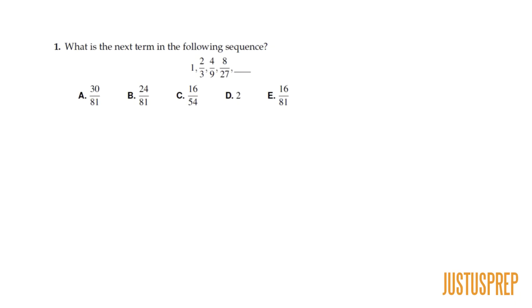Question number one, what is the next term in the following sequence? One, two-thirds, four ninths, eight over 27, and then the fifth term. Now we could use the formula for a geometric sequence because here this is a sequence and it's either going to be geometric or arithmetic.